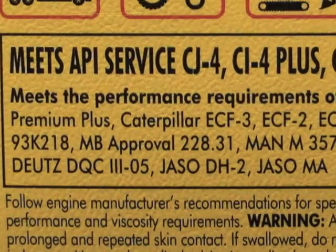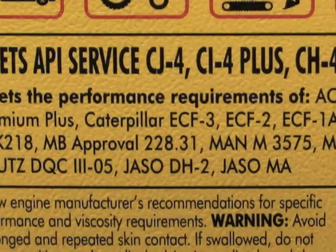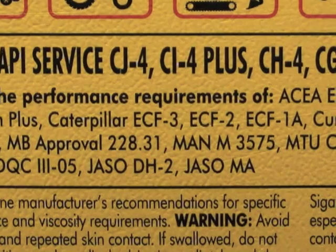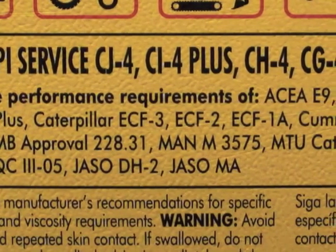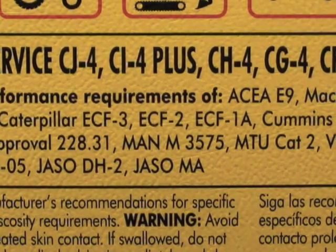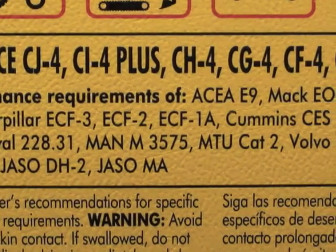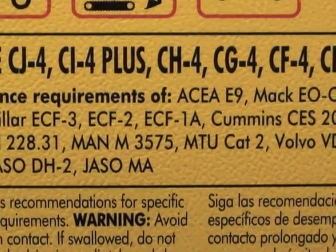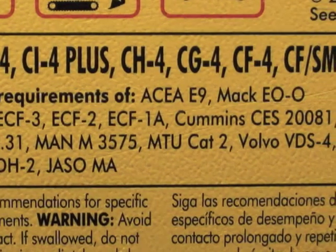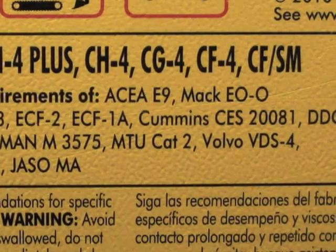Have you ever picked up an oil bottle and wondered what all those symbols and acronyms actually mean? There's a lot of information on a bottle of oil, if you know how to decode it. Today I'm going to walk you through the symbols and codes so you can understand what you are buying and, more importantly, purchase the correct product for your application. There is no best oil for all applications — no one size fits all. The best oil for a Prius is not the best oil for a Mack truck. Oil is application specific, and understanding the symbols and codes on oil labels helps you understand if you're choosing the right oil for your application.